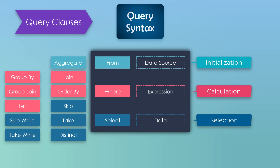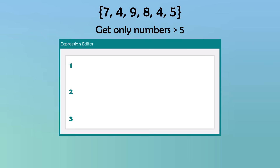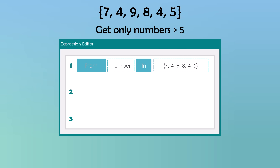Let's try to write a LINQ query using query syntax to understand it better. I have for example the following integer array which contains six numbers. I want to filter this array to get only the numbers which are greater than five. As mentioned, we always set from or aggregate at the beginning. For now I will use from clause. After that I define a variable — I will use the name 'number' — which represents the numbers inside the data source, then write the preposition 'in' and set the data source, which is the array. This statement acts like a foreach loop, looping all numbers inside the array.